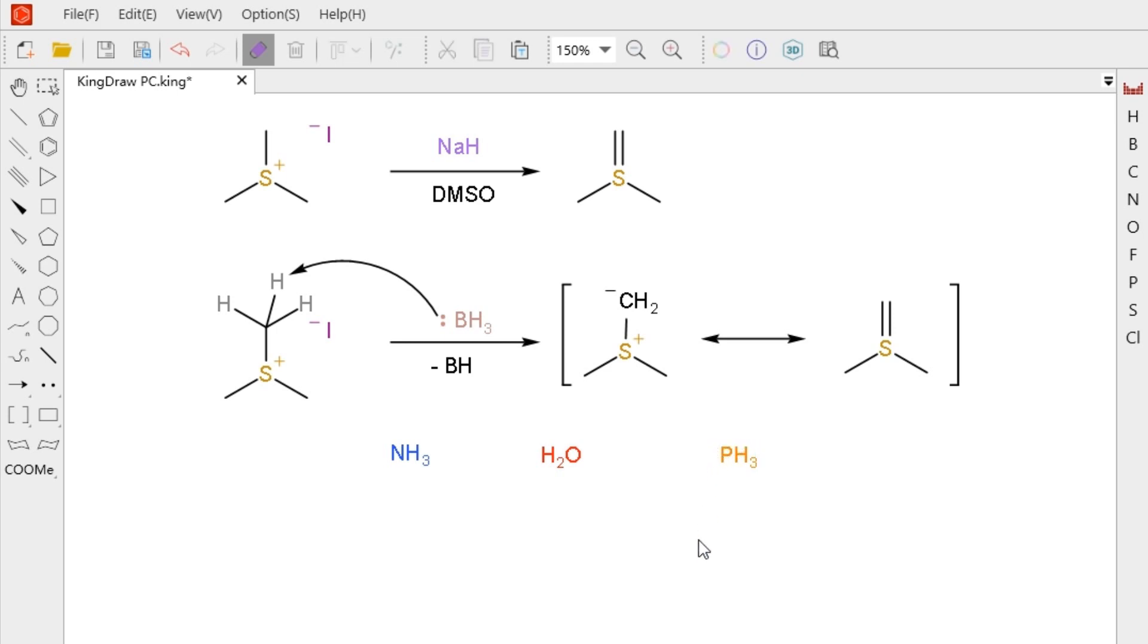KingDraw does not support adding charge, radical, and lone pair directly to text, brackets, arrows, and groups currently. You can use text tool to input these symbols.